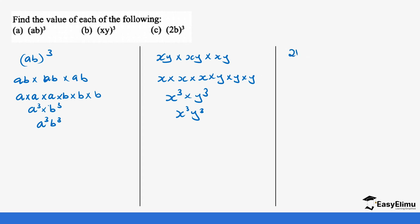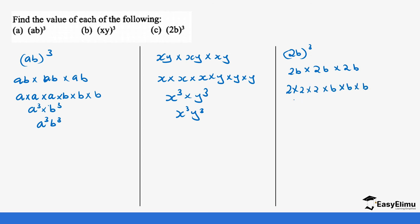For (2b)³, multiply 2b three times: 2b times 2b times 2b. Group the like terms — numbers together and variables together: 2 times 2 times 2 is 8, and b times b times b is b³. So (2b)³ equals 8b³. That's how we get the cube of specific numbers, whether known or unknown.